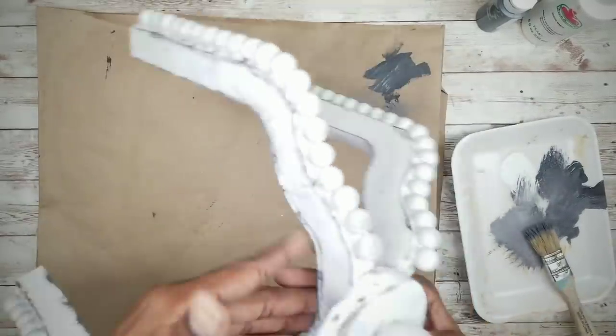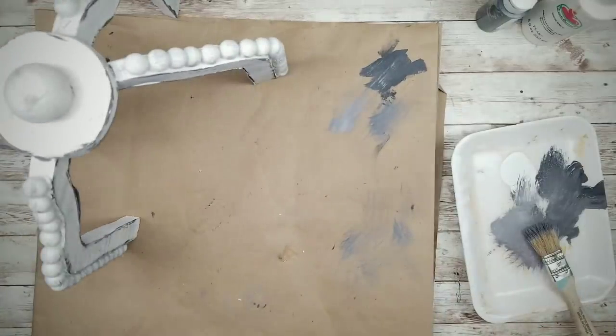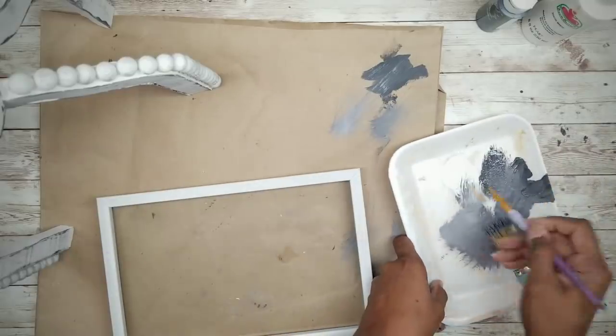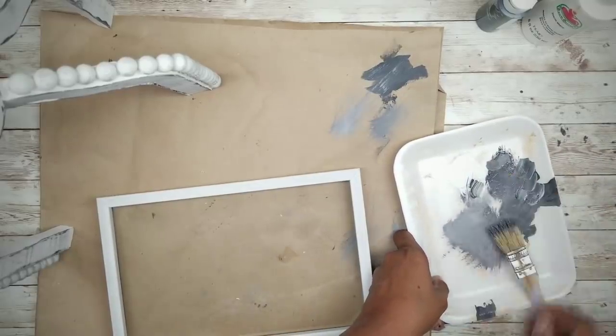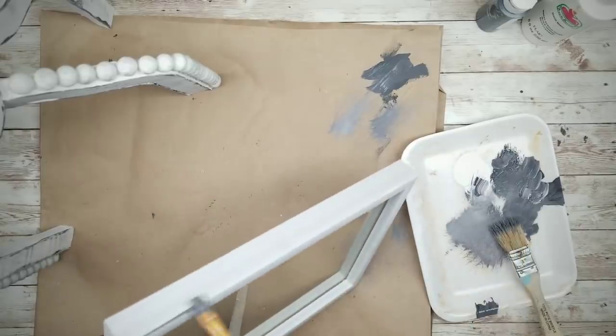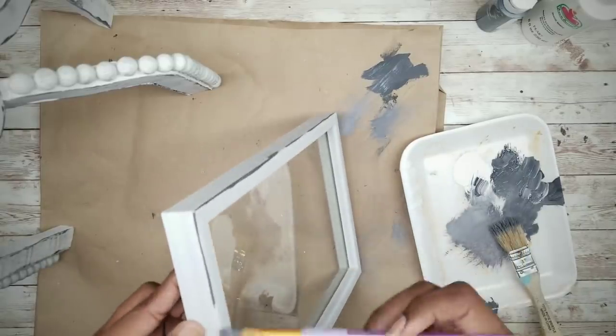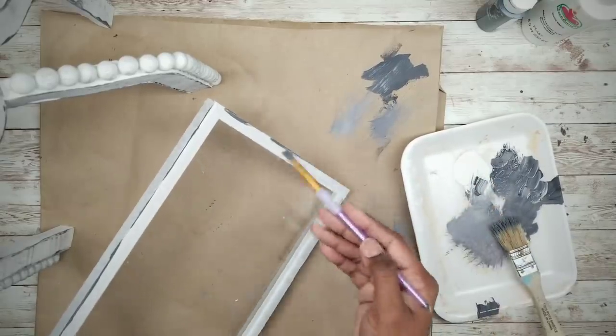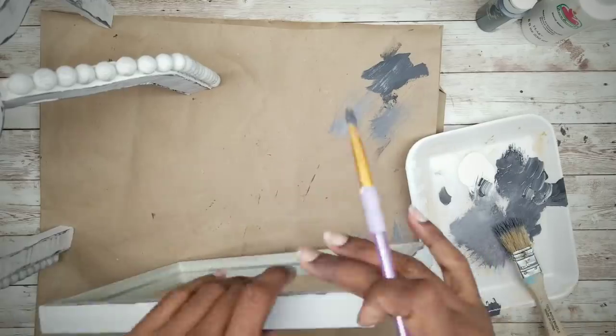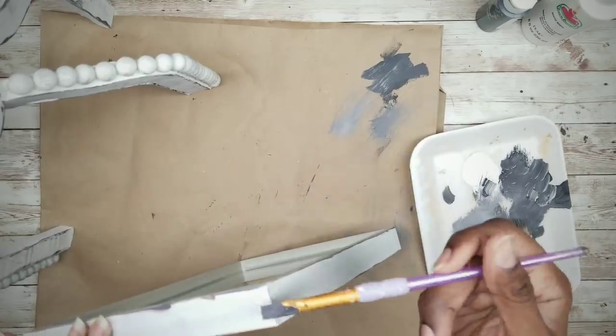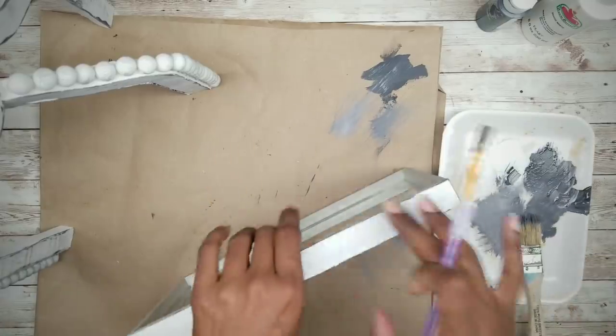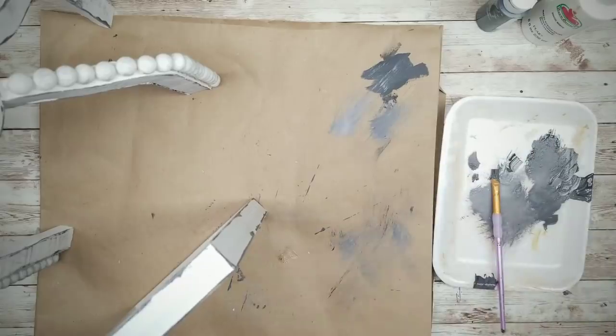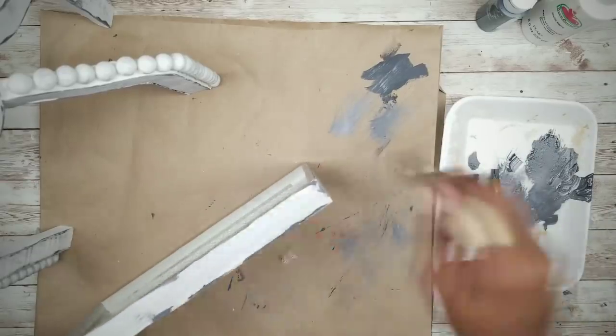Now that that is done, we can sit that to the side to dry. We're going to grab the frame and distress the edges of the frame in the same manner. I'm just going to start by distressing the edges around the top and the bottom and also making sure we get those corners as well. Then I'm going to dry brush the worn look on there.